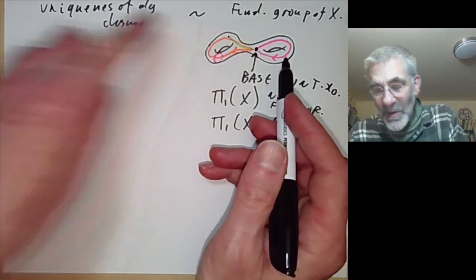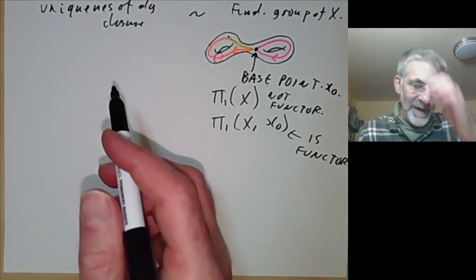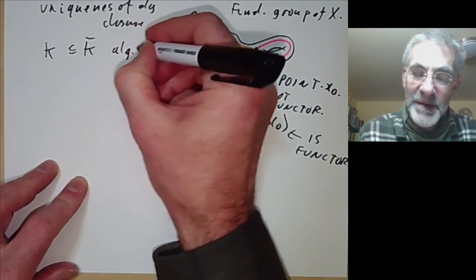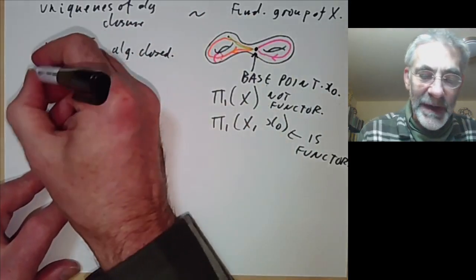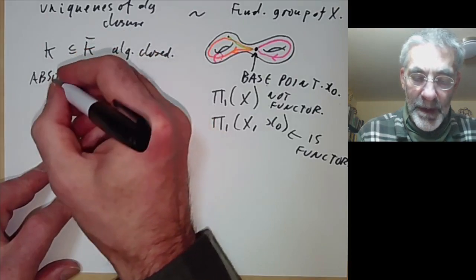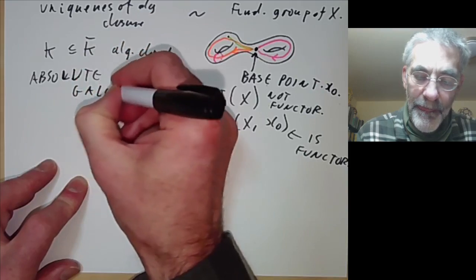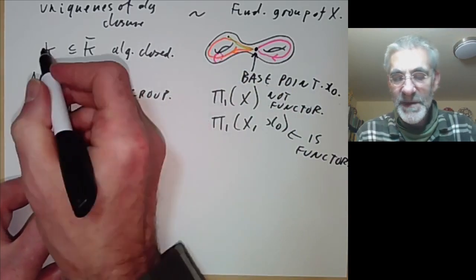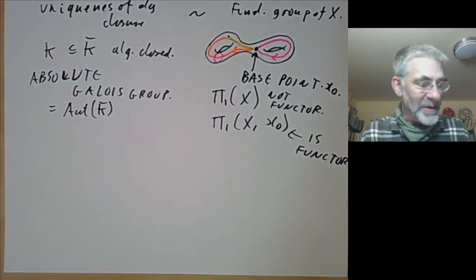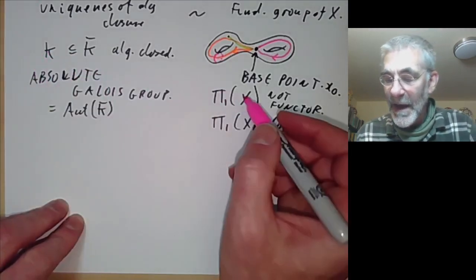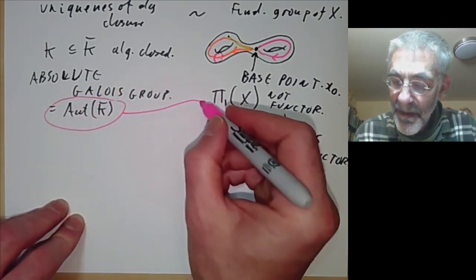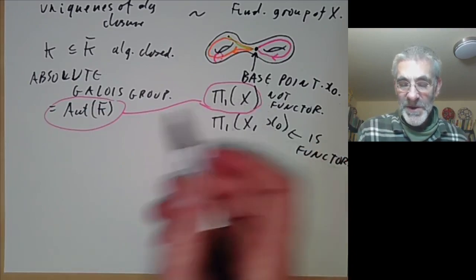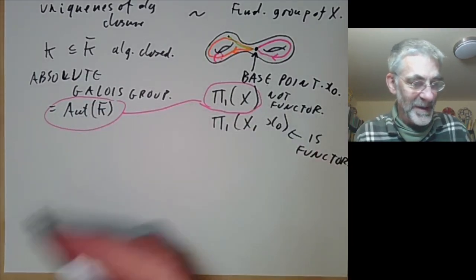The same sort of problem happens for algebraic closure. If you've got a field k we can embed it in an algebraically closed field k̄ and define an absolute Galois group, which I'm going to define as the automorphism group of k̄ that fixes all elements of k. So it's just a group of symmetries of k̄. You should think of the absolute Galois group of a field k as being analogous to the fundamental group of a topological space X. In fact, as I mentioned a few lectures ago, Grothendieck had a formalism in which it more or less is the fundamental group of something, if you're willing to use étale topology.